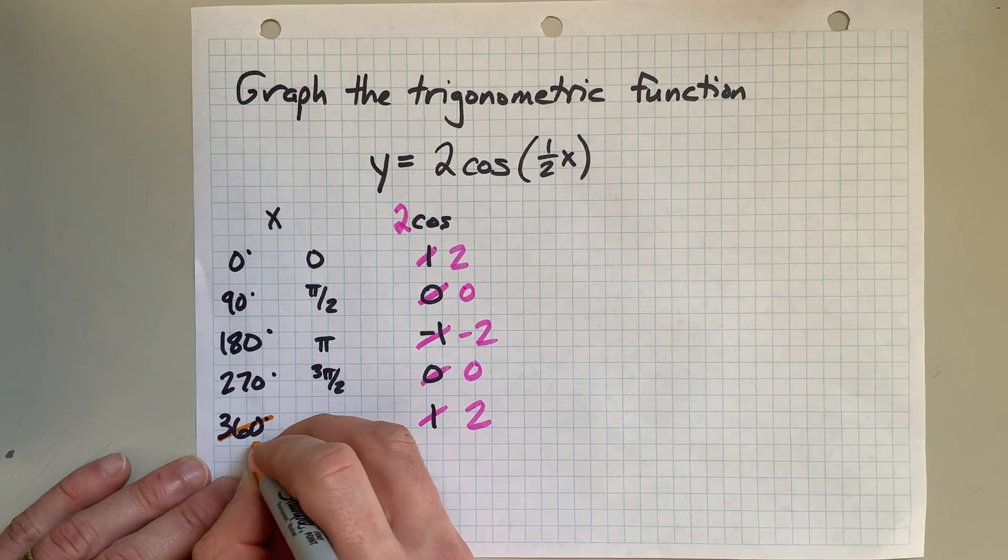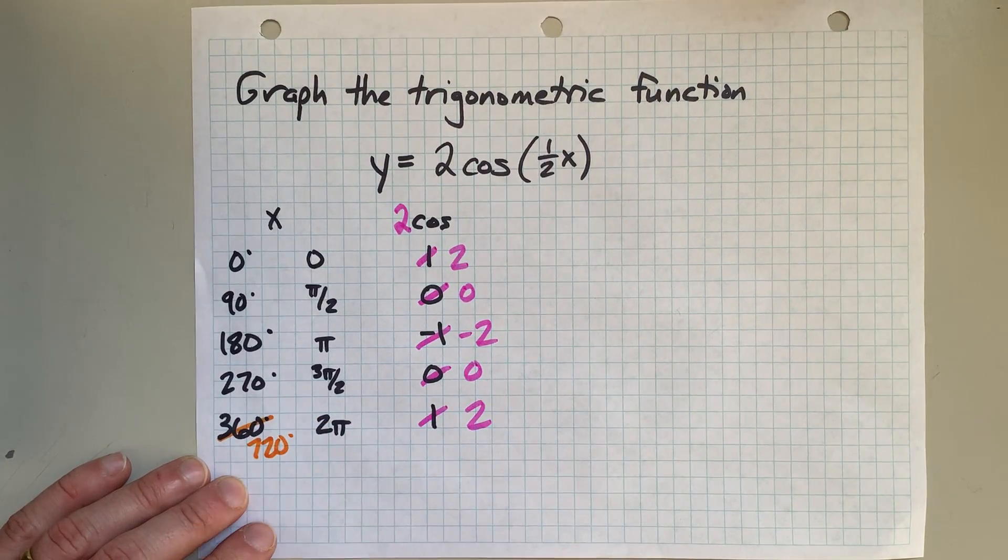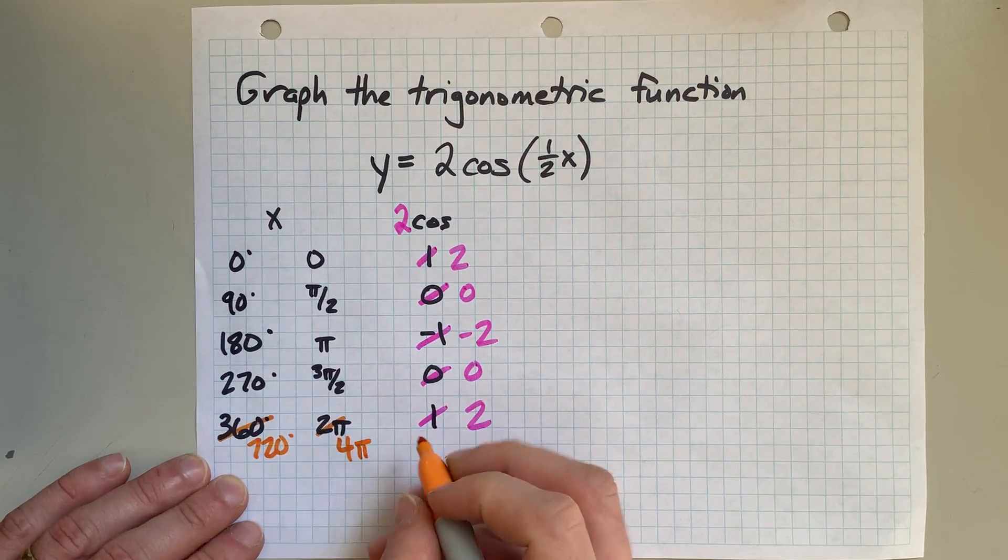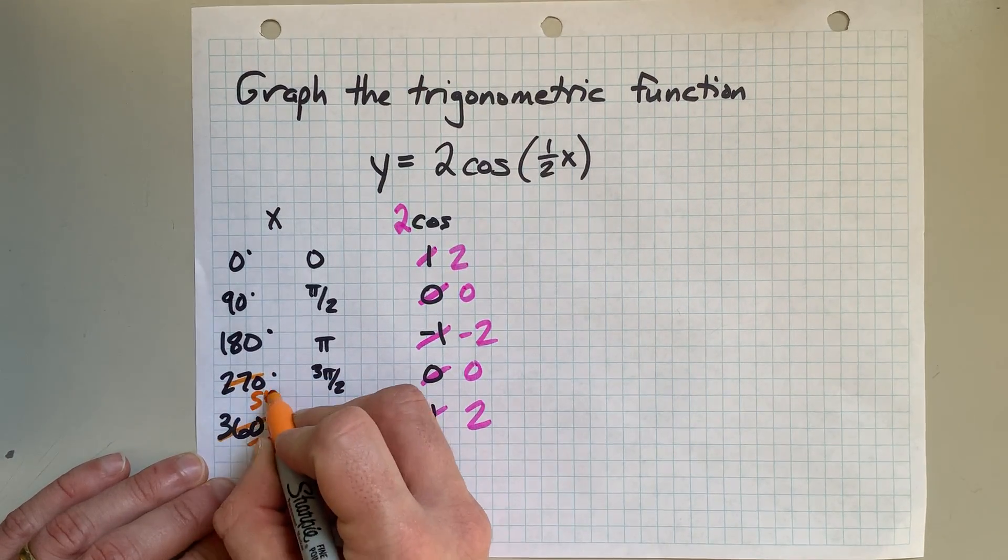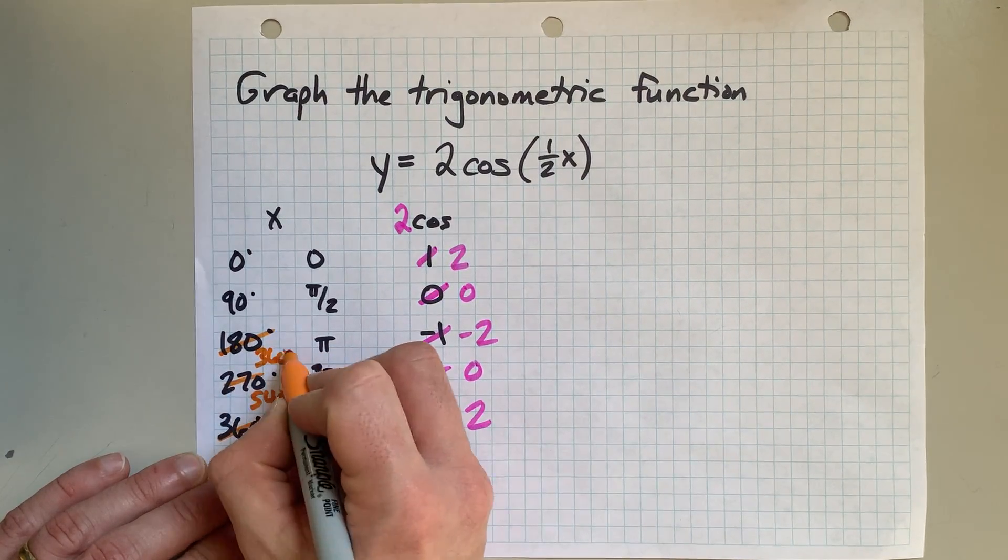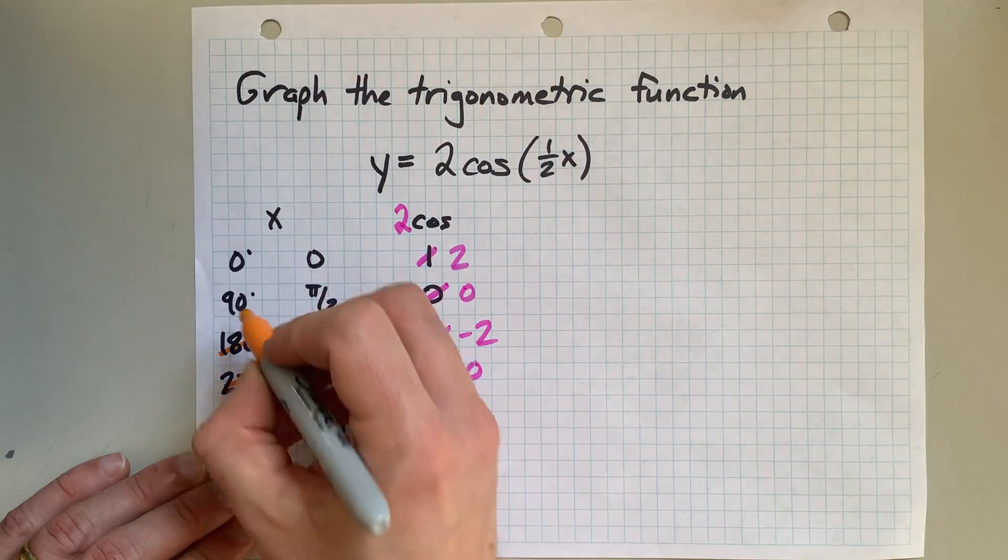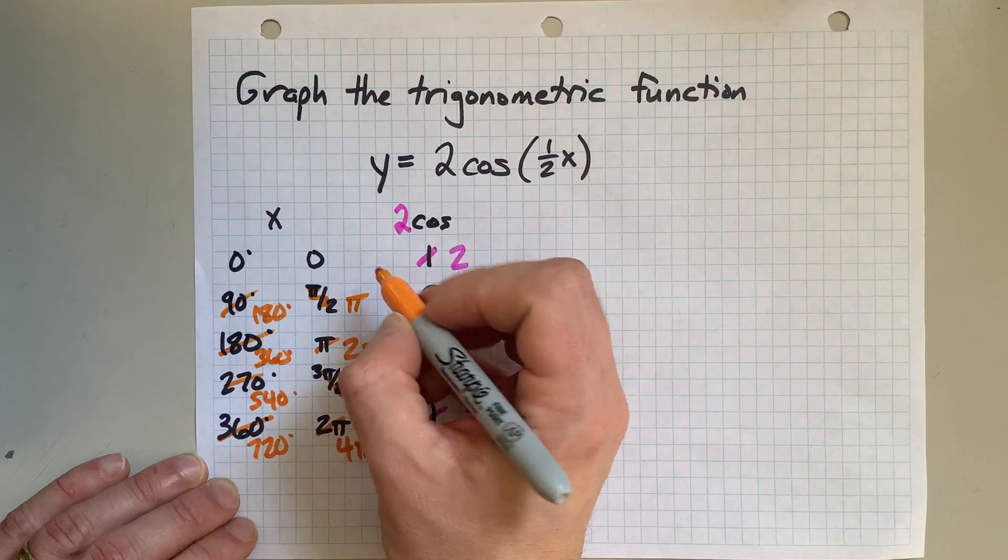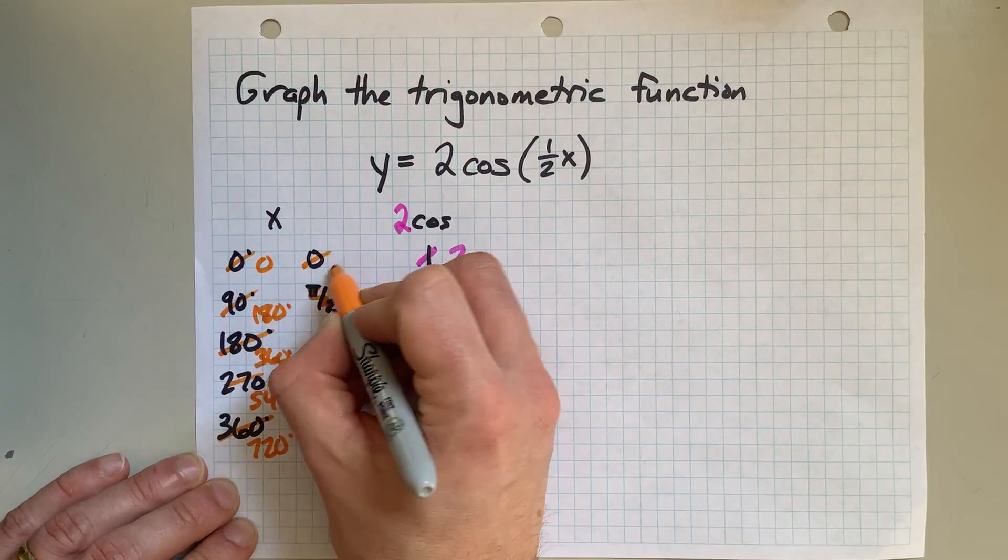So we're going to double all of these. 360 becomes 720, or in radiance, that becomes 4 pi. Double this is 540. Double this is 3 pi. Double this is 360. Double this is 2 pi. Double that is 180. Double that is just pi. And double 0 is 0.